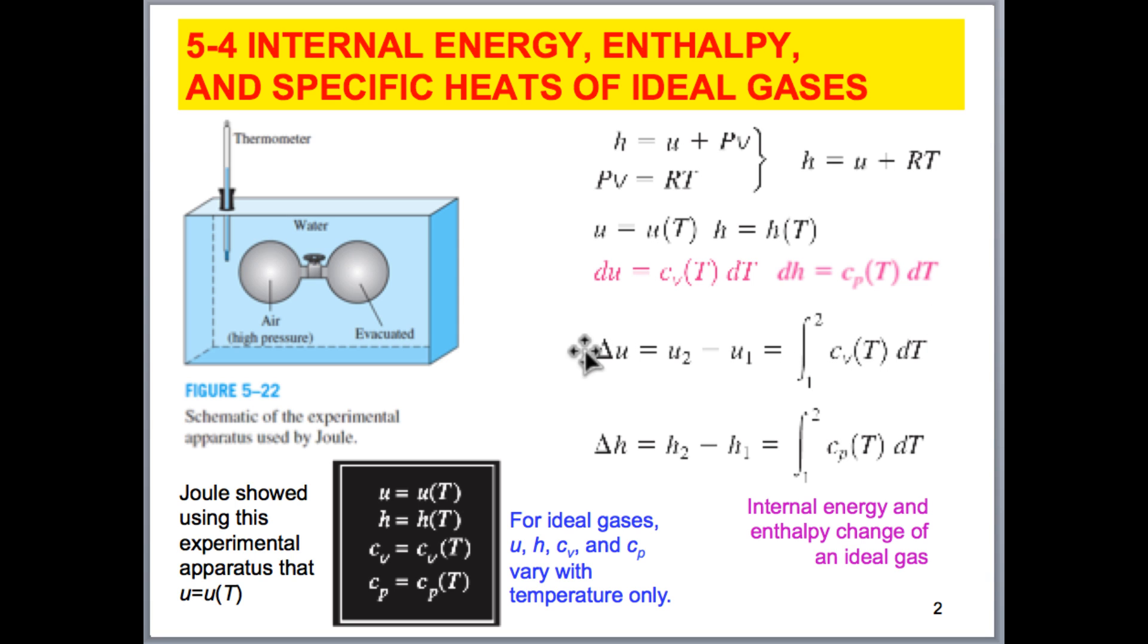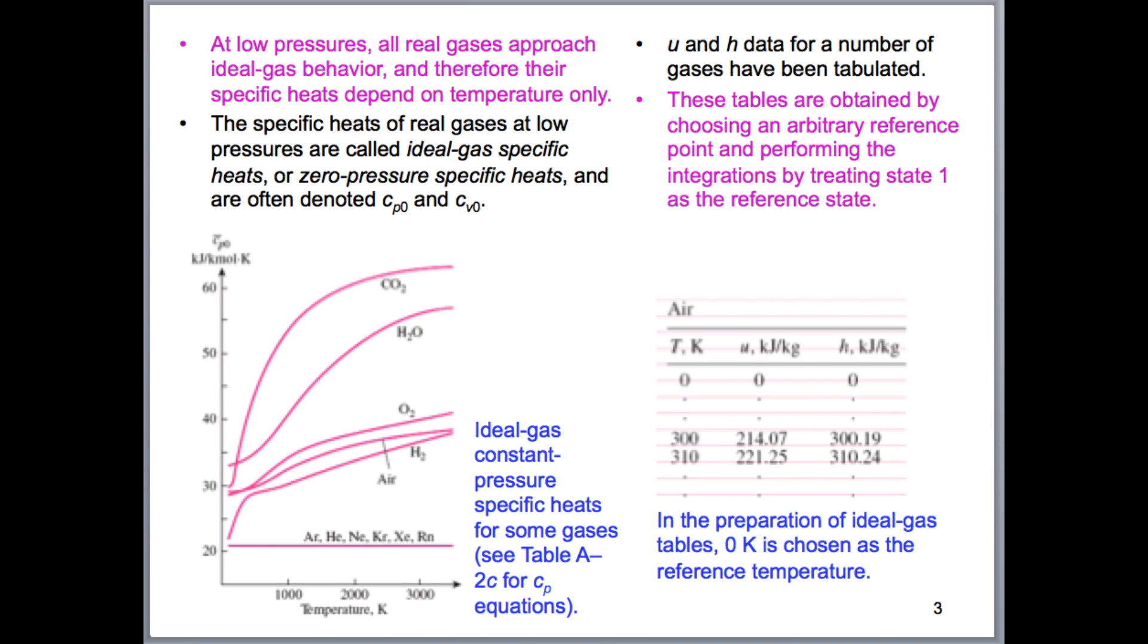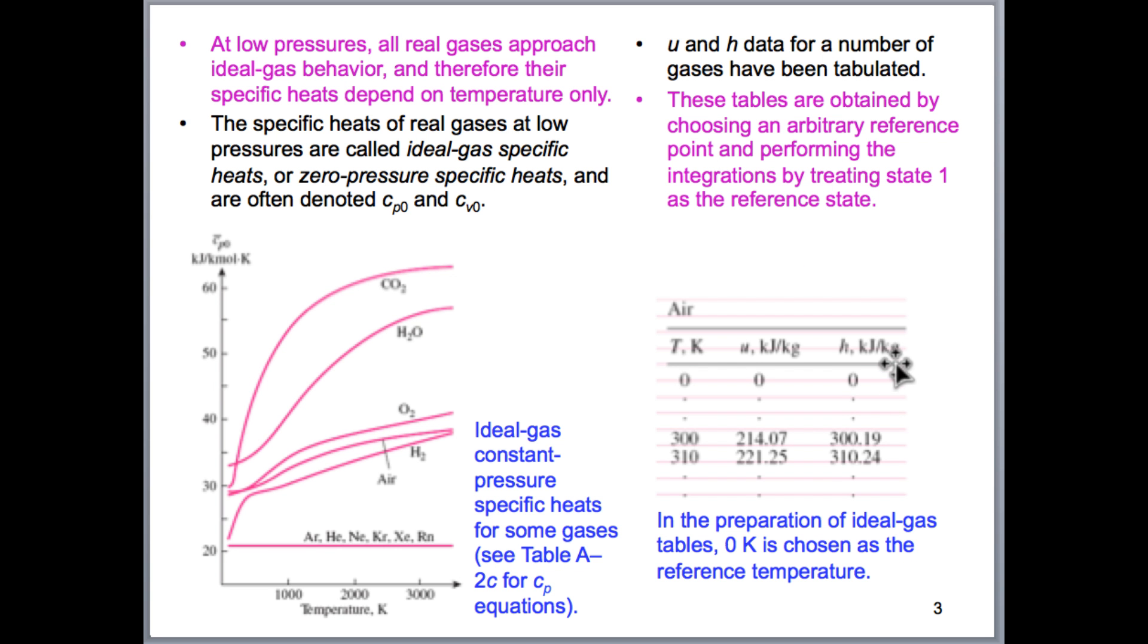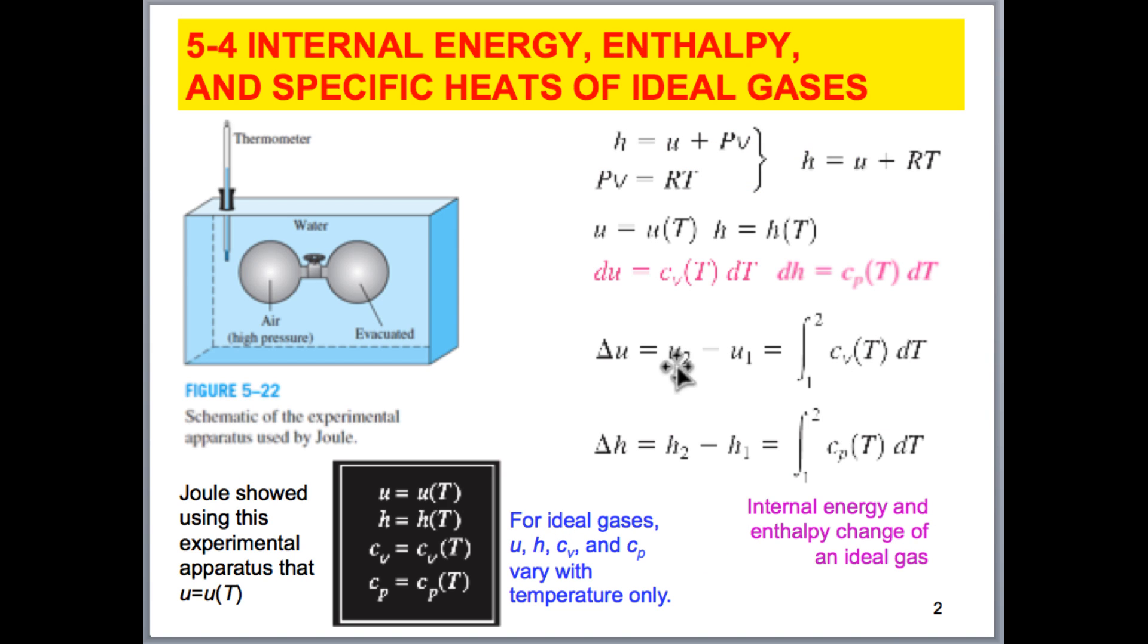Knowing that, since on the left-hand side we have internal energy as a function of temperature, on the right-hand side these variables must be a function of temperature as well. So knowing that specific heat, and by specific heat I mean these variables here, are a function of temperature, how will we integrate this? So these are a function of temperature, and we're integrating with respect to temperature. So we would need some type of relationship that helps us to determine these values here, these internal energies or these enthalpies.